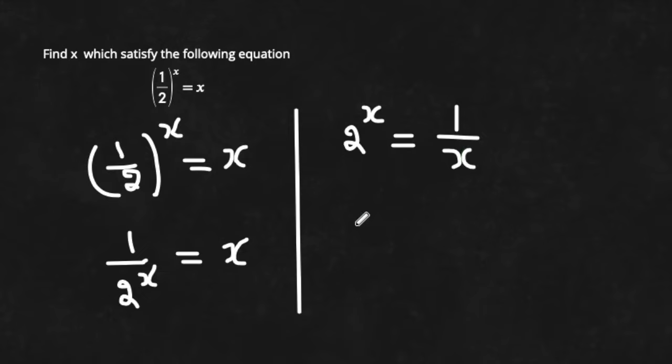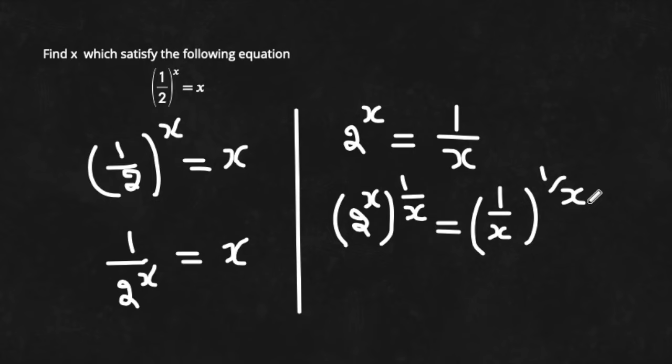Now take the whole power 1/x on both sides. On the left hand side we have 2^x whole power 1/x, and on the right hand side we have (1/x)^(1/x). The x cancels with x on the left hand side, we have 2, and on the right hand side we are left with (1/x)^(1/x).